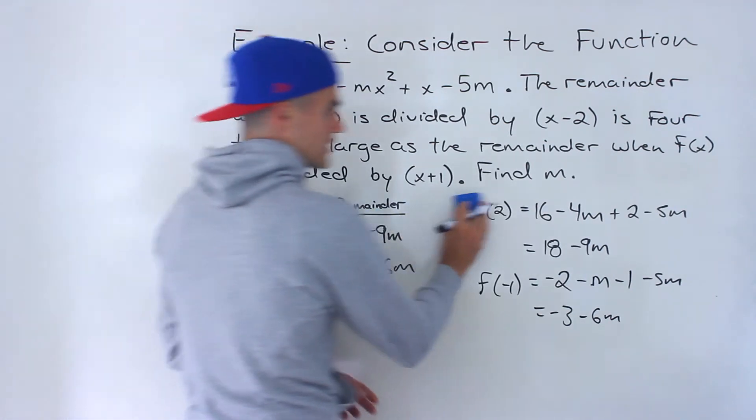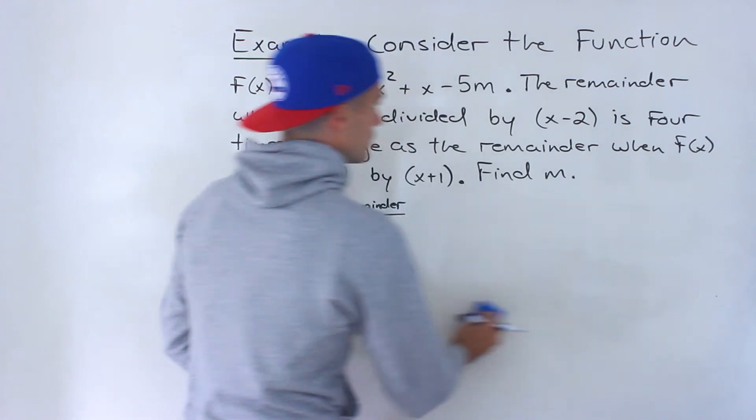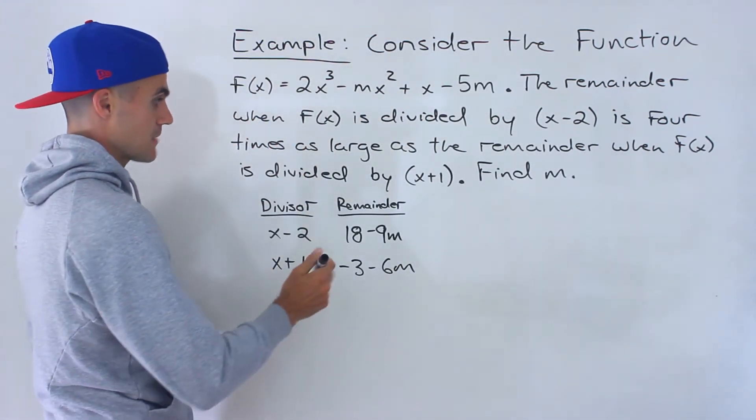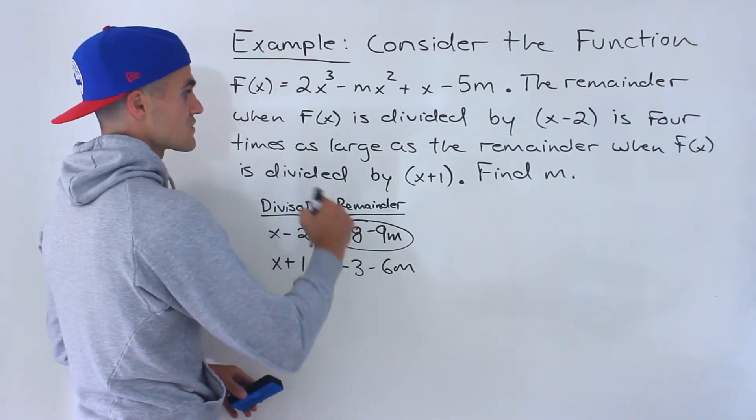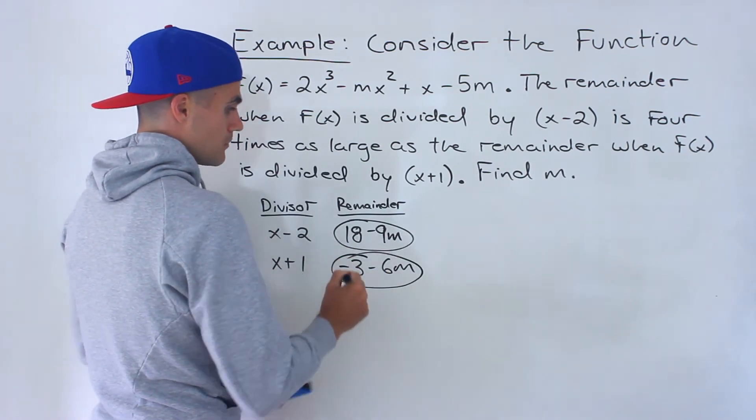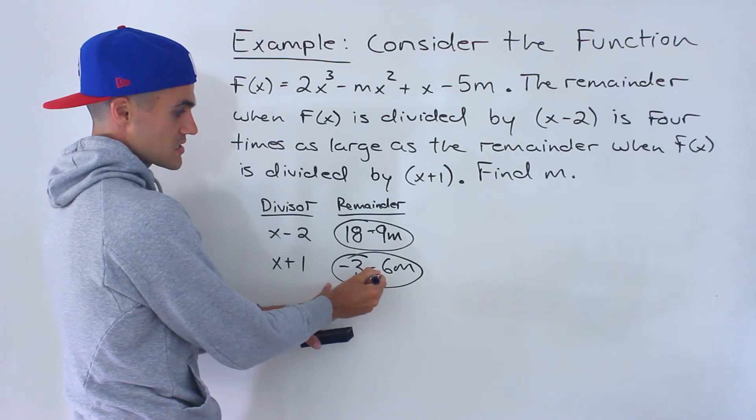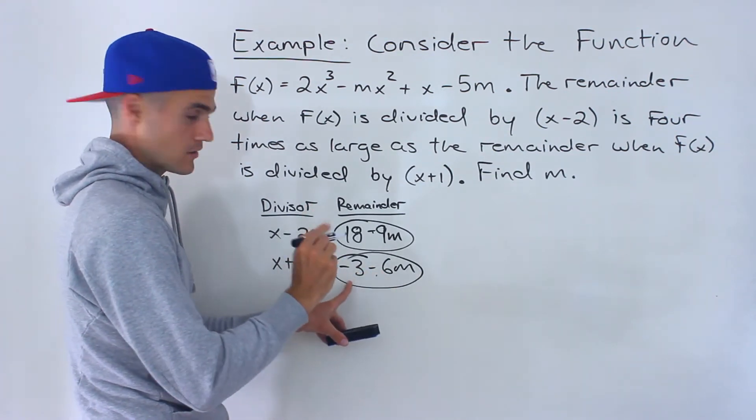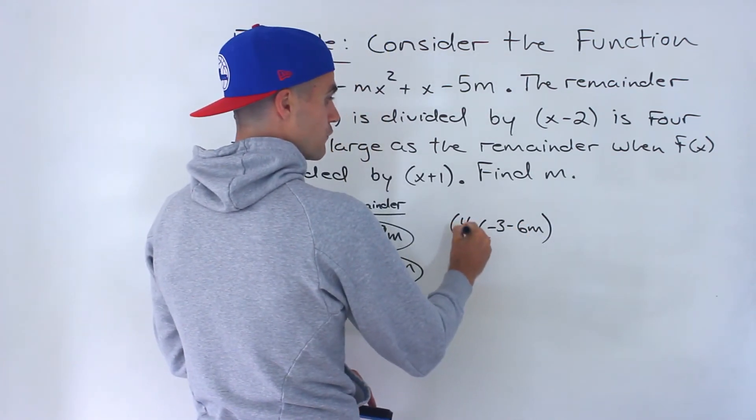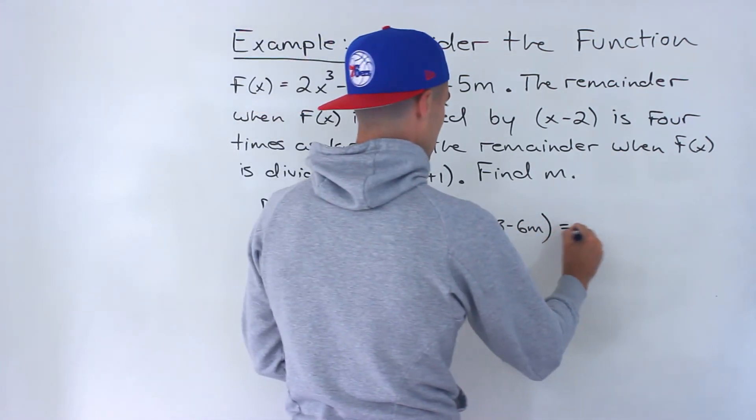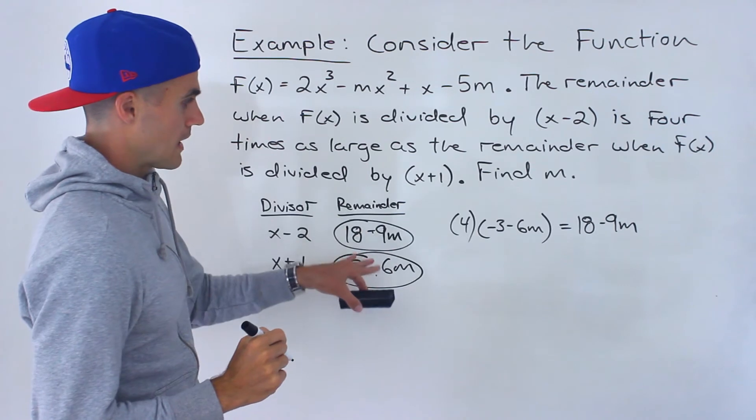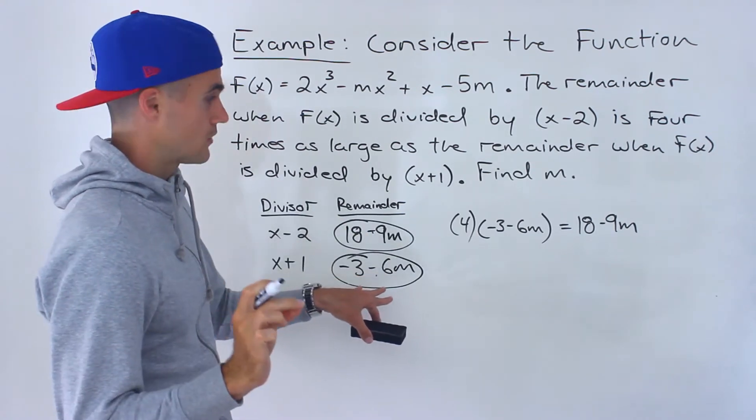Now that we have these expressions, we can make an equation from this sentence. We're told the remainder when f(x) is divided by x minus 2 is four times as large as this remainder. Meaning this one's the larger one, this is the smaller one. If we take the smaller remainder and multiply by four, we get the larger remainder.